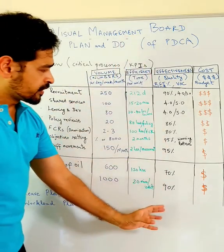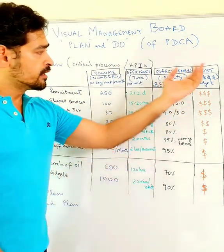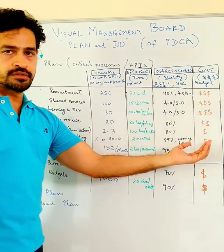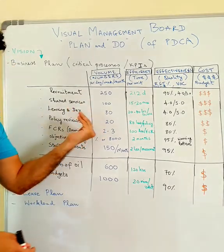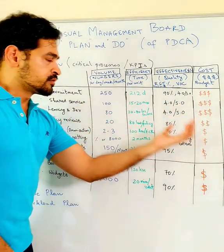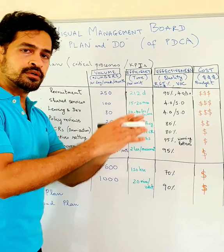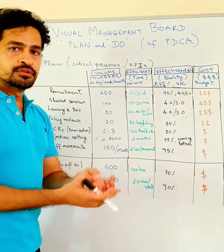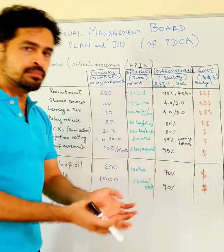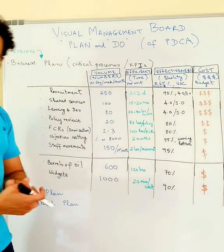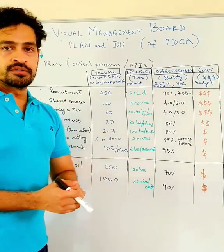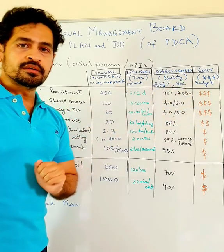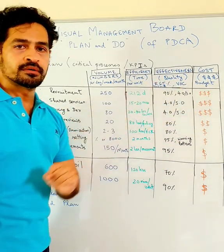Then comes cost. To do all of this we incur some cost — the cost of doing this business. What is the cost of recruiting an Omani mature hire, or recruiting 250 mature hires? It is measured in terms of the number of team members involved in recruitment, what is the technology cost, and all other costs — basically what is the budget.